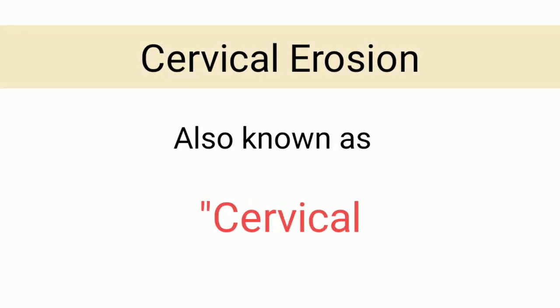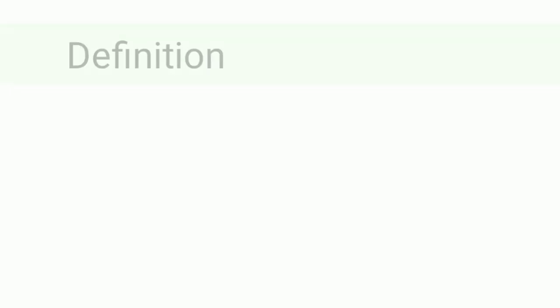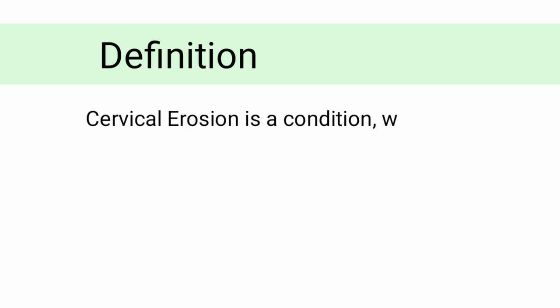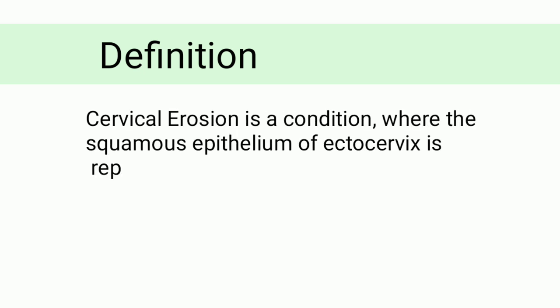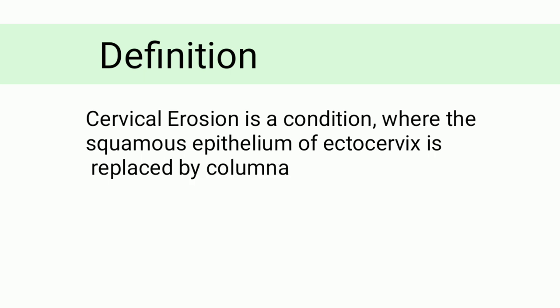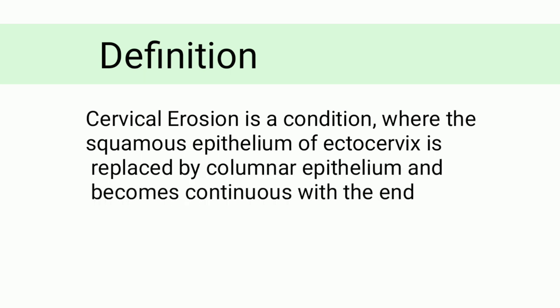Cervical erosion is also known as cervical ectropion. Regarding the definition, cervical erosion is a condition where the squamous epithelium of the ectocervix is replaced by columnar epithelium and becomes continuous with the endocervix.